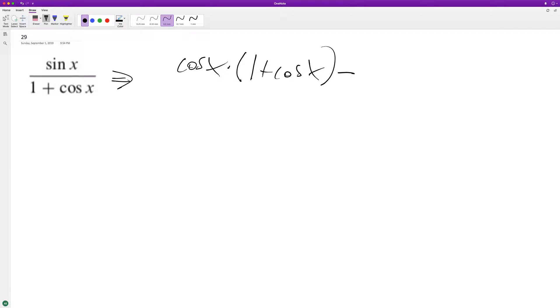Minus times the numerator times the derivative of the bottom, which is going to be derivative of one is zero, derivative of cosine is negative sine x. And then we'll have this all over one plus cosine x.